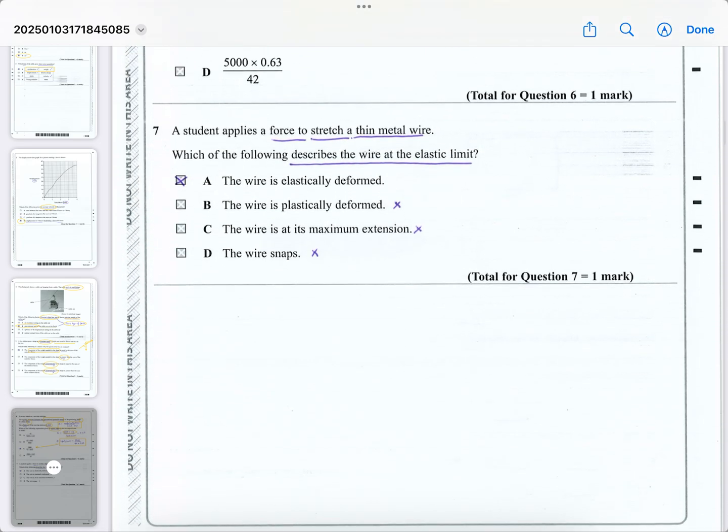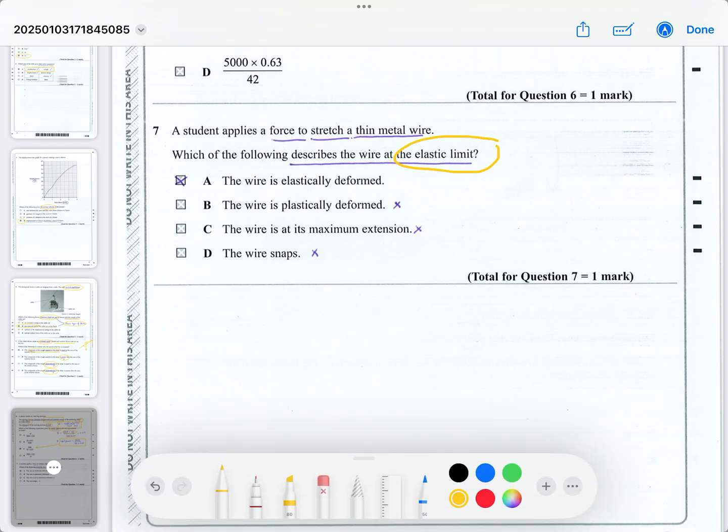Question seven. It says a student applies a force to stretch a thin metal wire. So we're talking about elasticity. Describe which of the following describes the wire at the elastic limit. So the key terms are elastic limit. The wire is elastically deformed up to the elastic limit. That is true. The B says it's plastically deformed. Well, no, that's beyond the elastic limit or the yield point where it gives in and it will never return to its original shape. But at the elastic limit, if you remove the force, it will return to its original shape. So it is still elastically deformed. And then the wire is its maximum extension. No, because it can extend beyond the elastic limit. And the wire snaps. No, it will have to go into the plastic region before it snaps. So it's just another reasonably simple knowledge question.